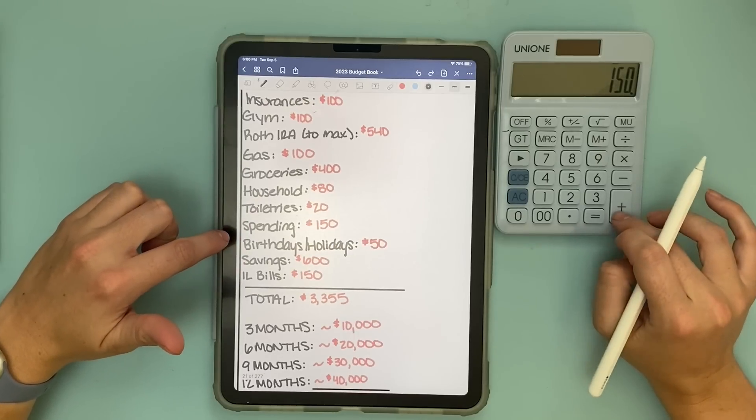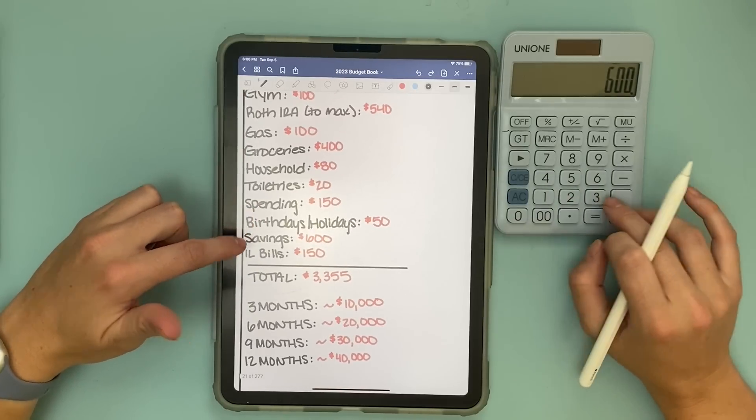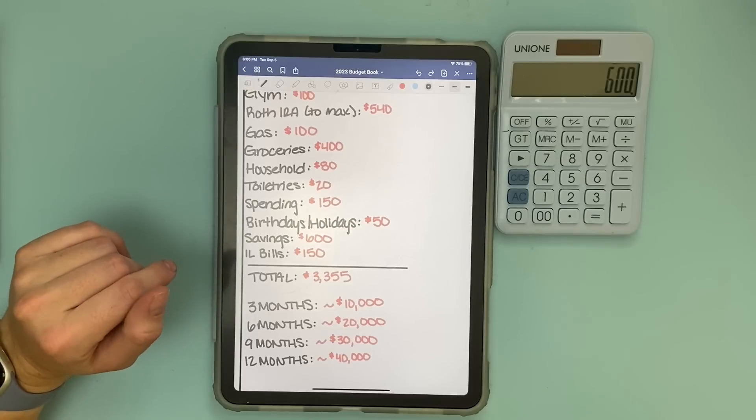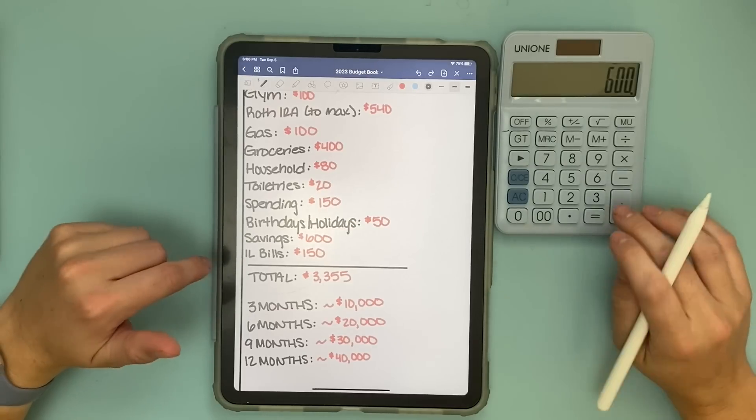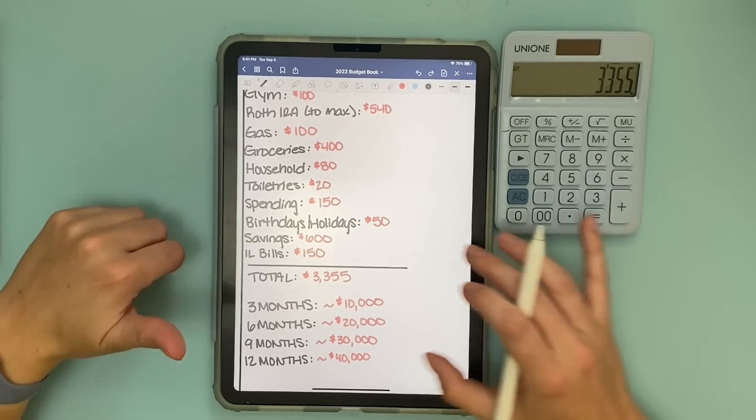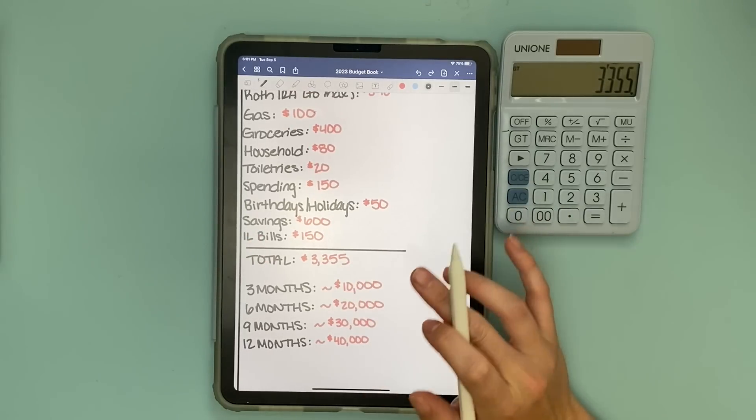$80 a month for household expenses like toilet paper. $20 a month for toiletries. $150 for spending so that is self-care, coffee, clothes, everything. Birthdays and holidays I put $50 a month. Savings $600 a month which includes car, vacation, travel, future house. And then intentional living bills is $150. So in total that is $3,355 for one month.